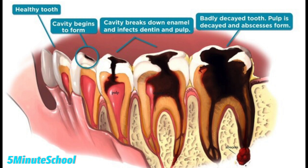It's possible for the cavity to get bigger because food and more bacteria get trapped inside, and it's very difficult to clean within these cavities. As more bacteria accumulate and you persistently eat high-sugar foods, more acid is released and the hole gets bigger. The decay progresses from the outer enamel layer deeper into the tooth into the dentin, which is the second layer, and eventually it can reach the pulp.